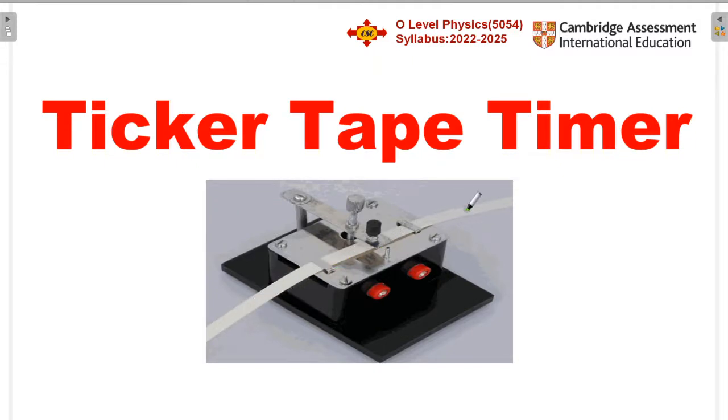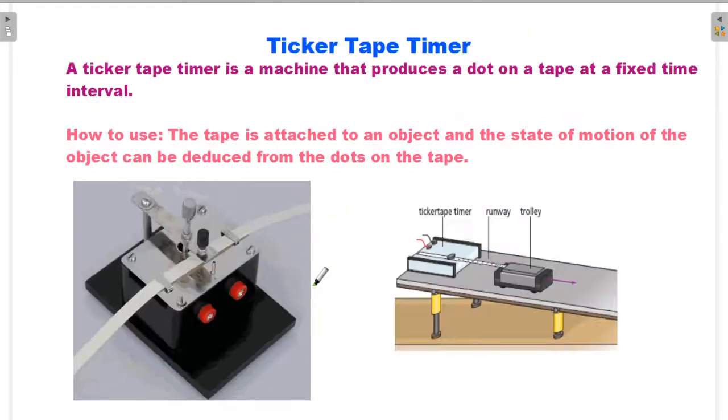We can analyze this tape to find out the speed of objects and acceleration. A ticker tape timer is a machine that produces a dot on a tape at fixed time intervals.